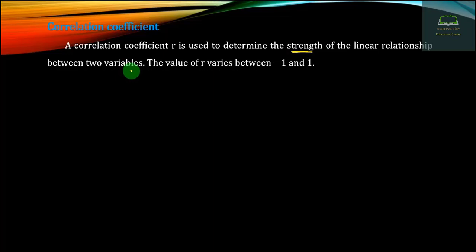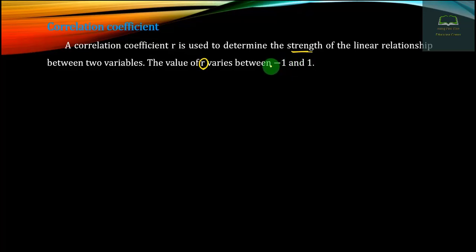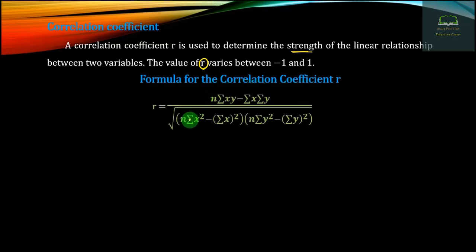Now, counting the correlation between two variables, you are going to use the formula: n into summation of xy minus summation x into summation y, divided by the square root of n into summation x squared minus summation x squared, into n into summation y squared minus summation y squared.